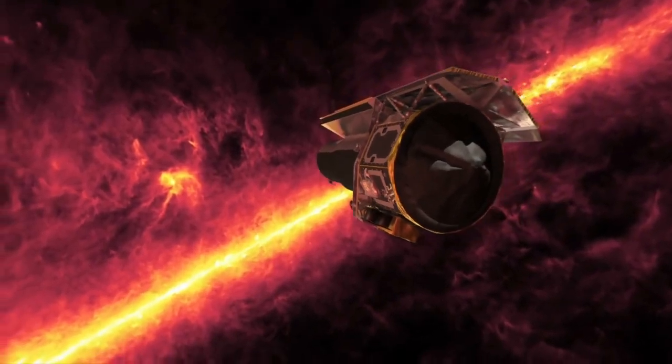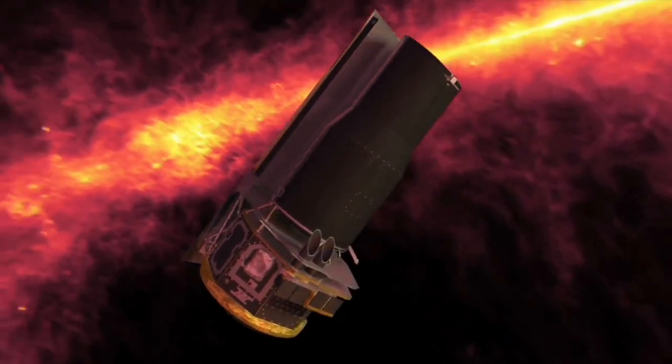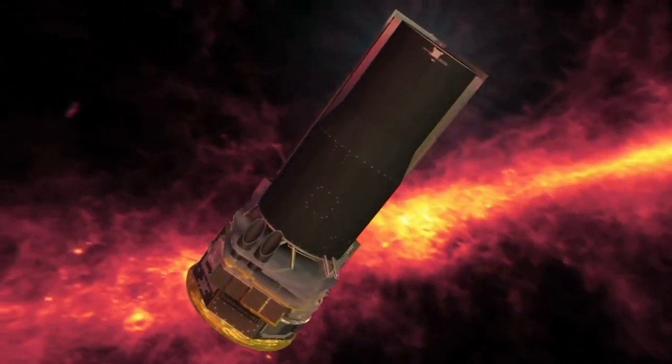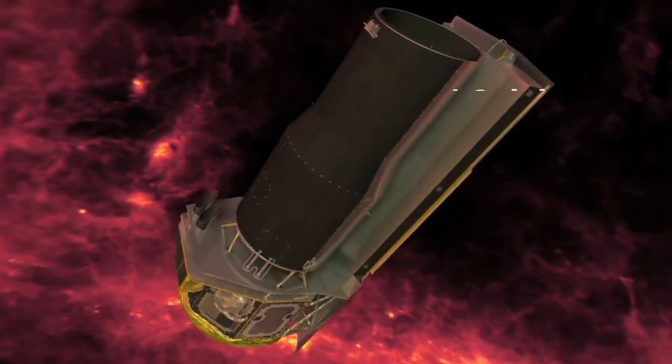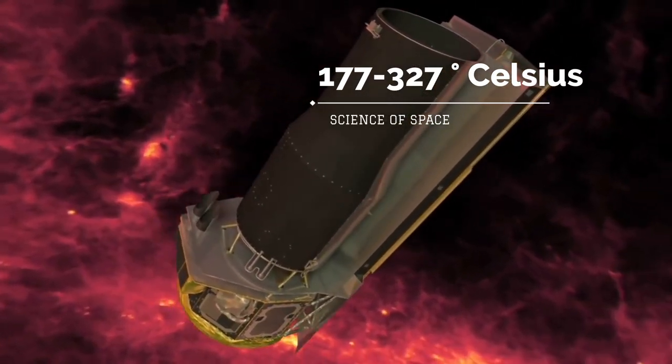However, the temperatures of these stars have not been measured as precisely. The brown dwarfs seen by the Spitzer Space Telescope have temperatures that range from 177 to 327 degrees Celsius.